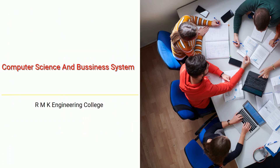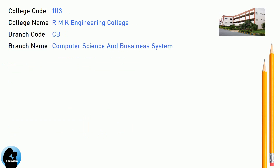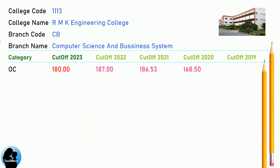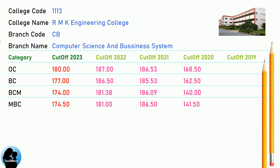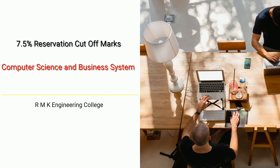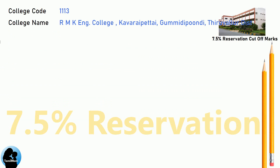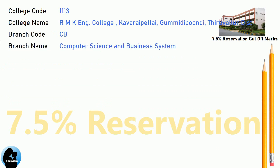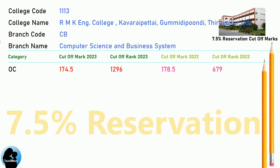DNA Cut-Off for RNK Engineering College in Computer Science and Business System. DNA 7.5 Reservation and DNA Round 1 Cut-Off for RNK Engineering College in Computer Science and Business System.